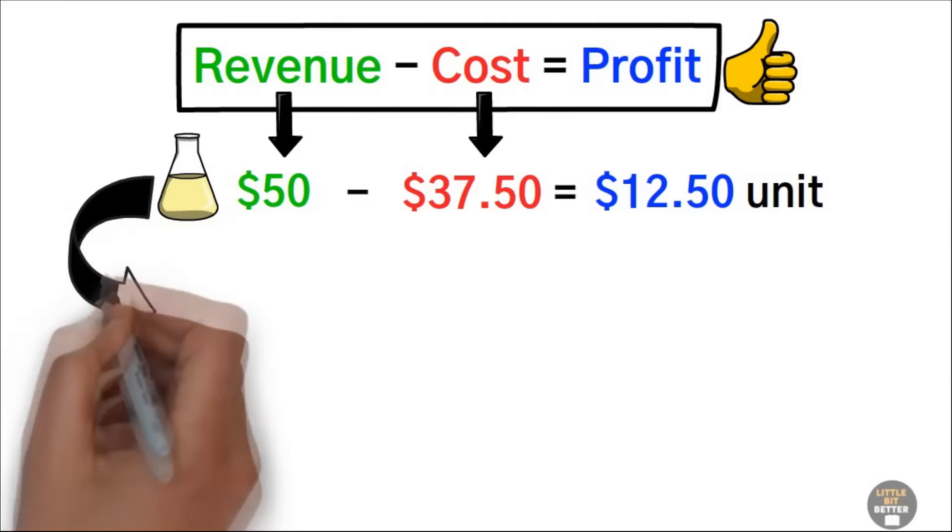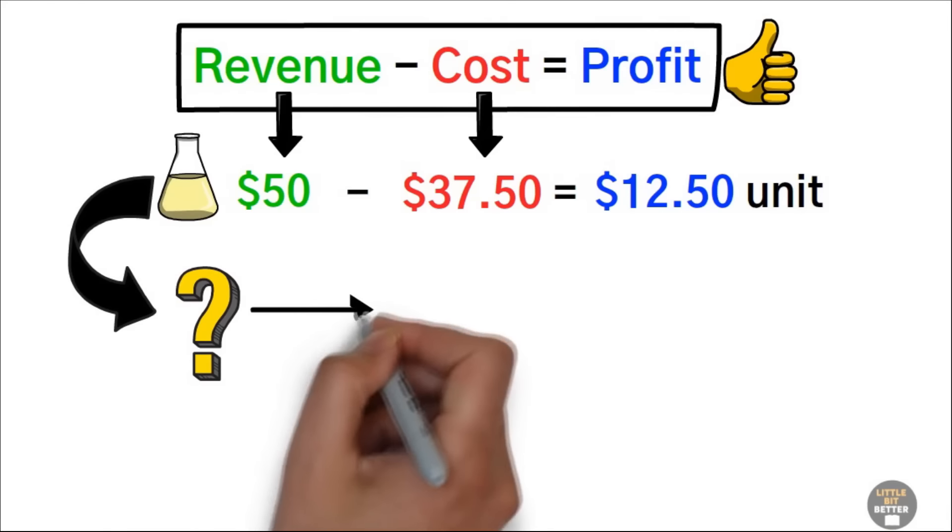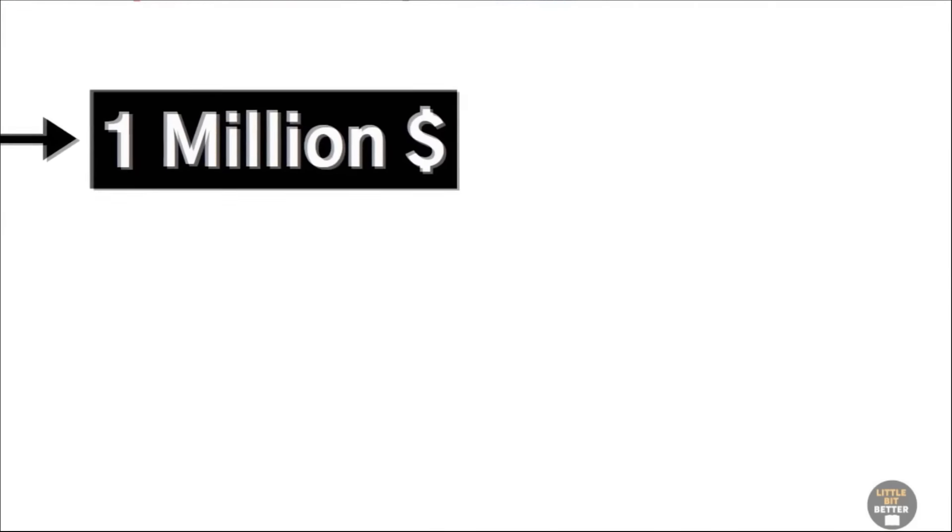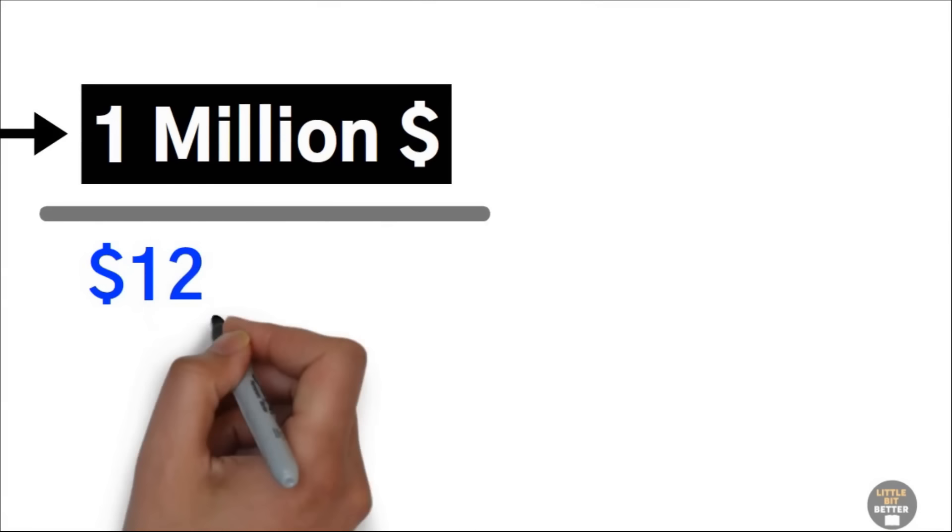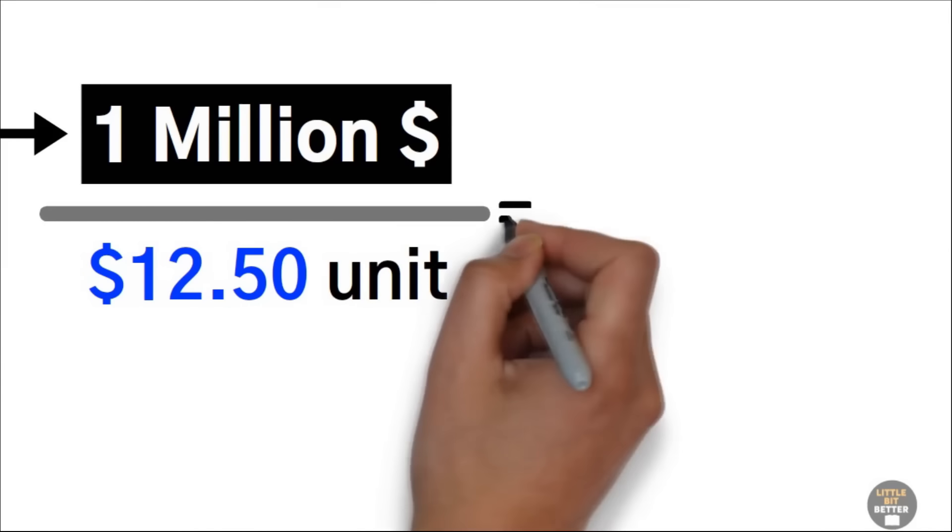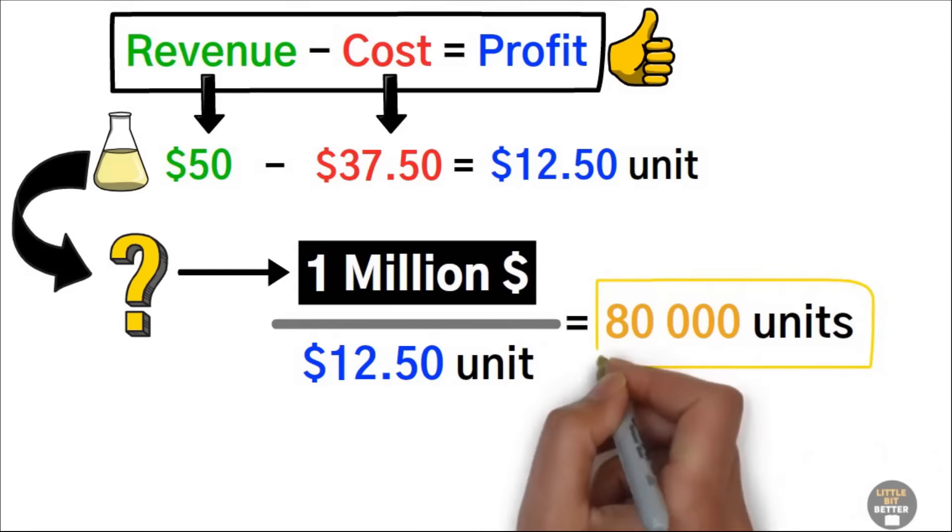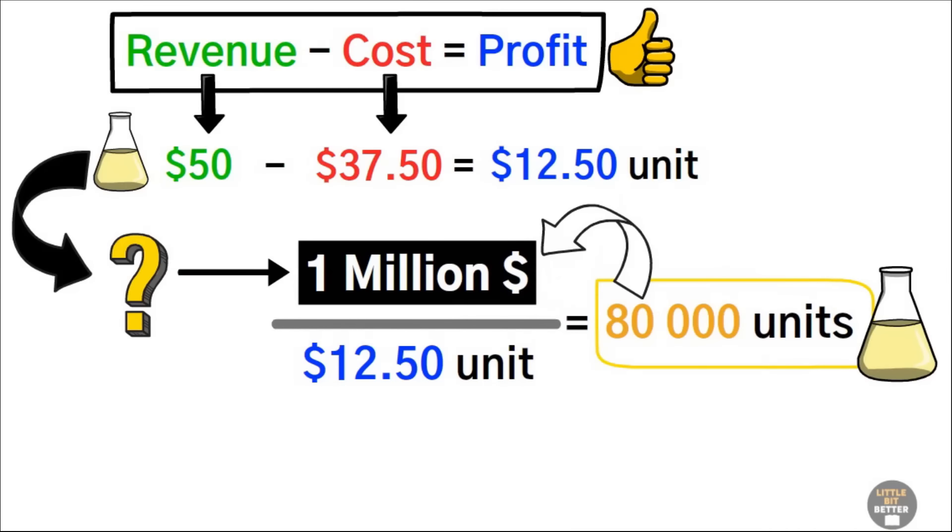To calculate how many products we need to sell to hit $1 million in profit, take your target profit amount, $1 million, and divide it by the profit per beard oil, $12.50, and you get 80,000 units. In other words, you need to sell 80,000 beard oils to hit $1 million in profit.